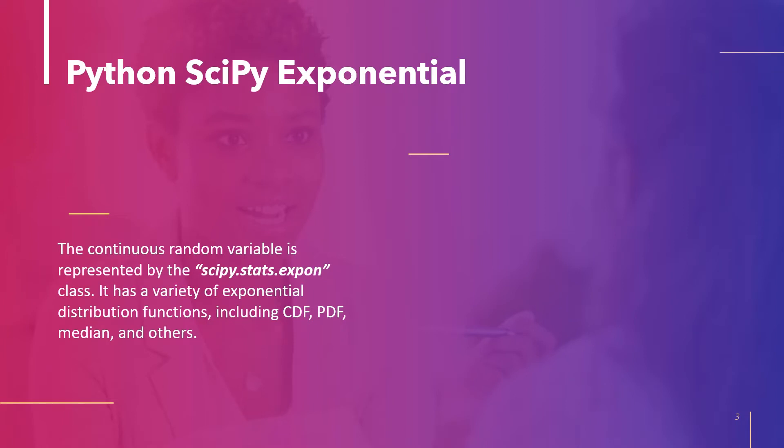The scipy.stats.expon represents the continuous random variable. It has different kinds of functions for exponential distribution like CDF, PDF, median, and more. It has two important parameters: loc for the mean and scale for standard deviation. As we know, we can control the shape and location of the distribution using these two parameters.